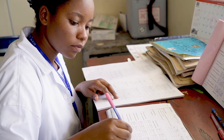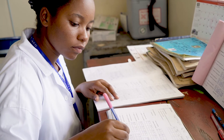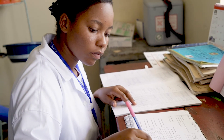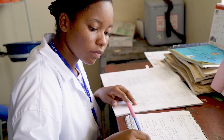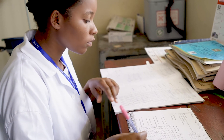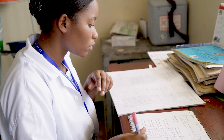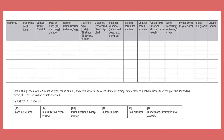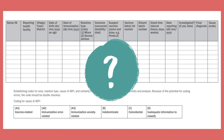Each month you receive reports of adverse events following immunization, or AEFIs, from the health facilities in your district. You organize the data into line lists and tabulate them by place, person, time, vaccine, and type of event. How can you tell if these numbers should raise concern?